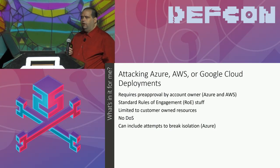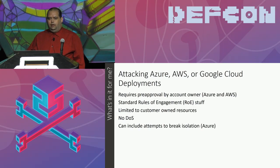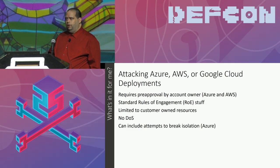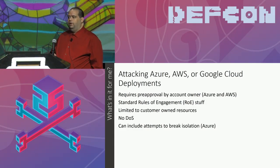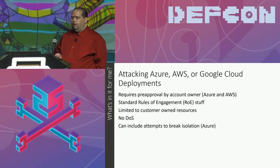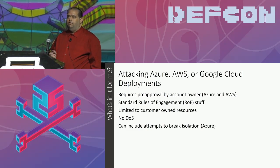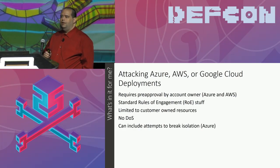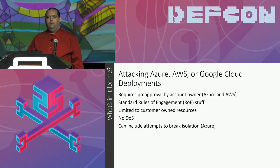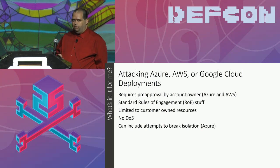Azure and AWS both require pre-approval via the account owner for attacking. Google Cloud did not require that based on our research. They all have standard rules: you can only attack your client's assets, only the ones in scope, not going after other customers' things, limited to their ownership. No denial of service. The Azure rules of engagement does allow attempts at breaking client isolation, with the stipulation that any success is reported to their security team immediately. There are bounty programs available as well for things like isolation escape.